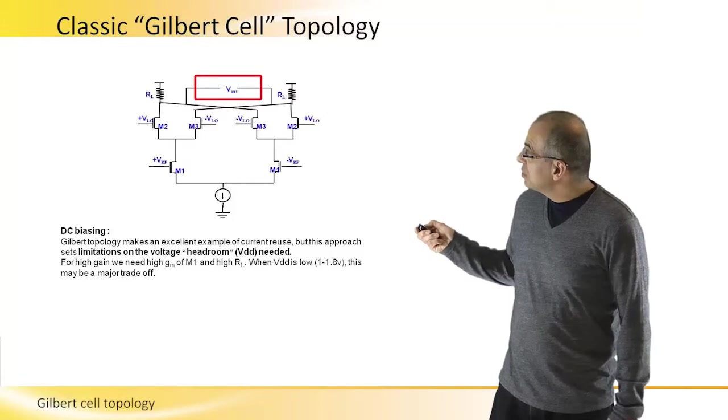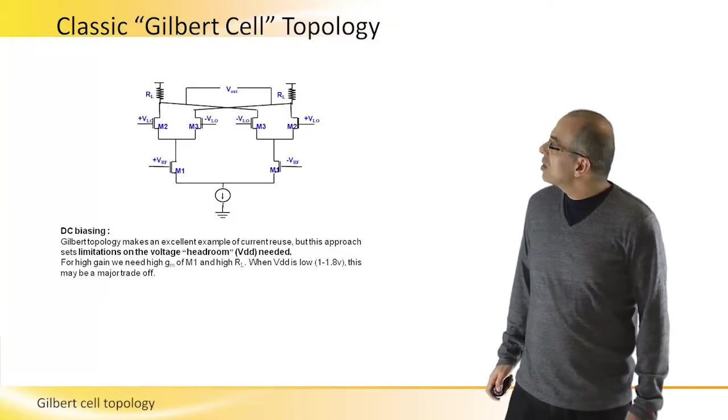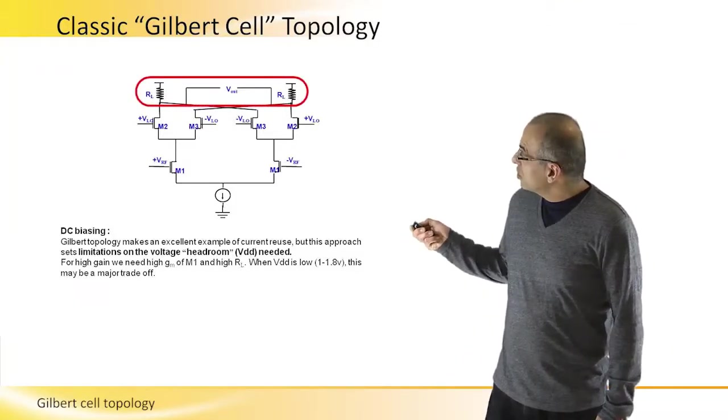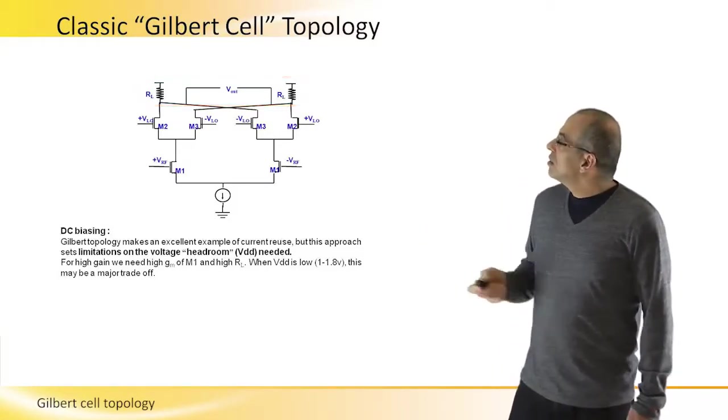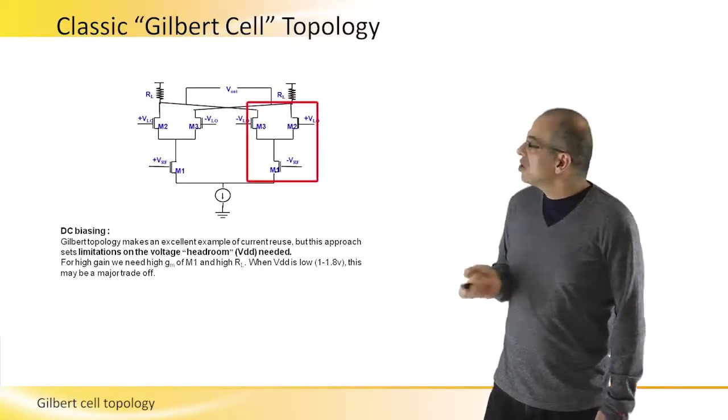We need to develop some DC voltage on these resistors, especially when we use it as a down converter, where these loads cannot be inductors. Then there's really a limitation on how much voltage we can drop on each of the transistors.